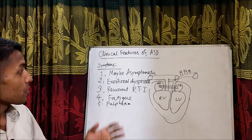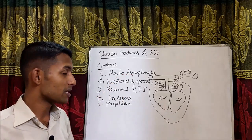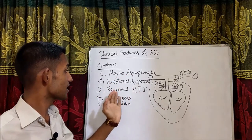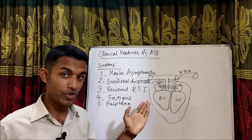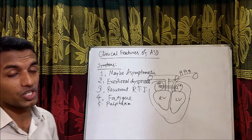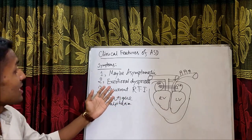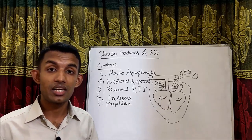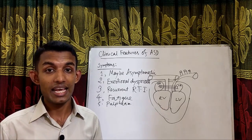Now the clinical features of ASD. The symptoms of ASD may include being asymptomatic, exertional dyspnea, recurrent respiratory tract infections, fatigue, and palpitation. But why is there exertional dyspnea or recurrent respiratory tract infections in ASD?